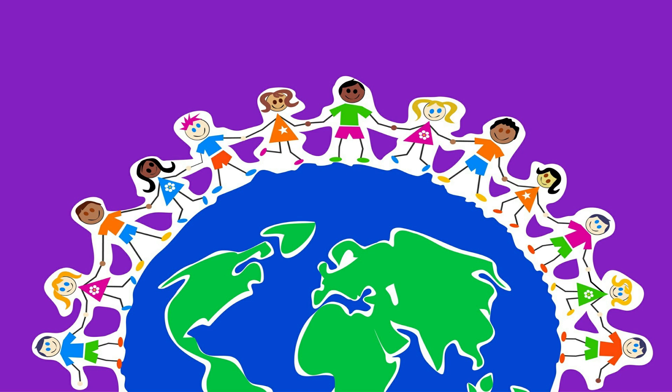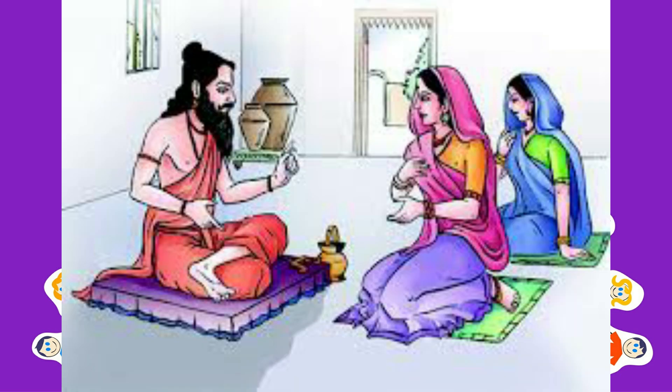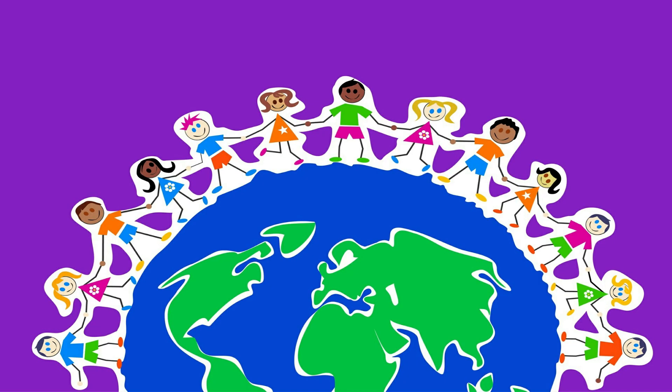Social life of the Indo-Aryans: The eldest male member was known as Priyapati, who exercised full authority over all the members of his family. Religious ceremonies, offerings, and the recitation of sacred hymns were done by him. In the Vedic period, women were given education and there was no parda system, no child marriage, and no polygamy. However, widow remarriage was allowed.